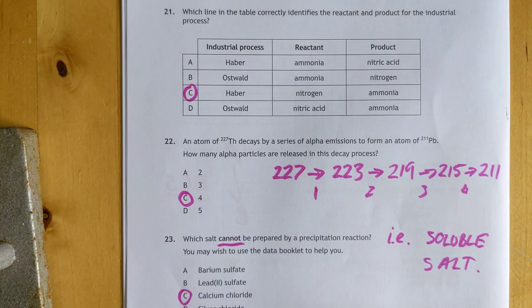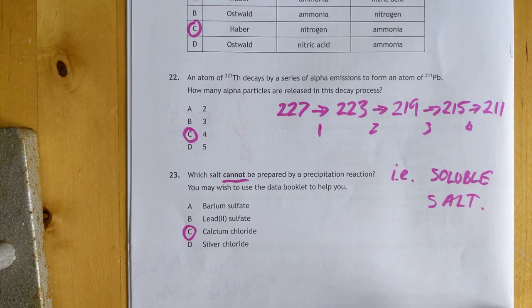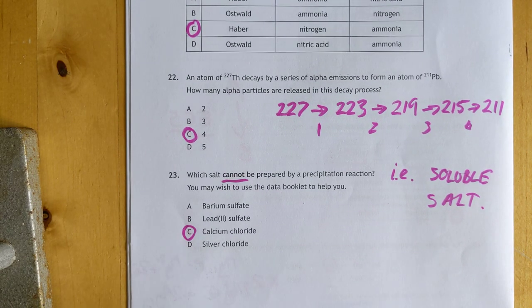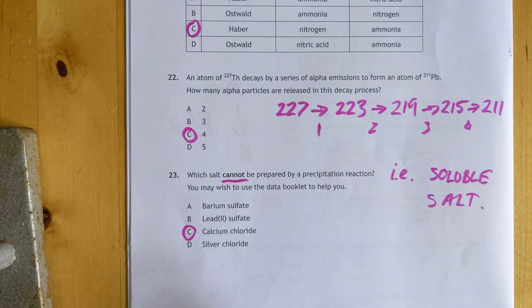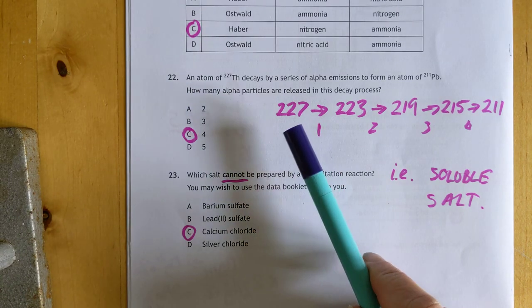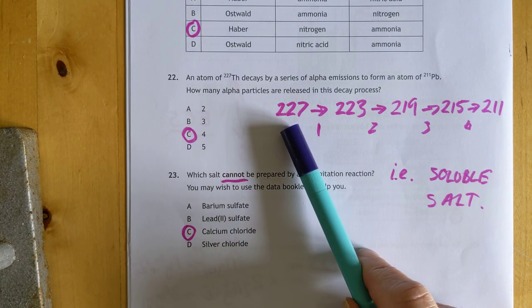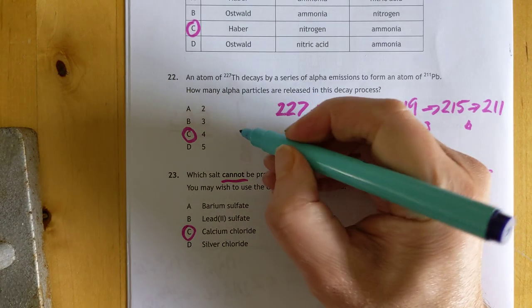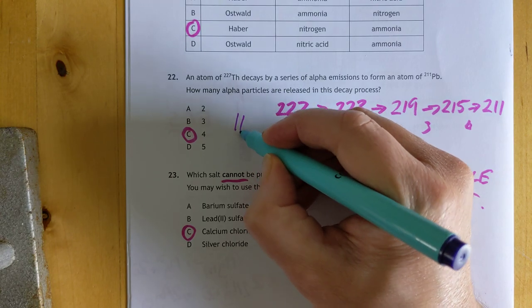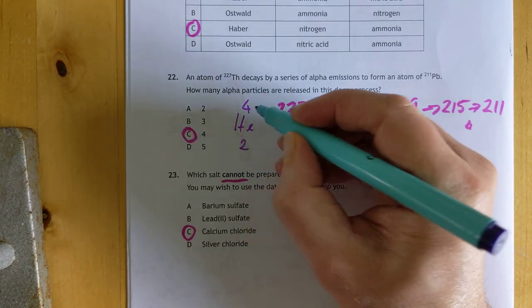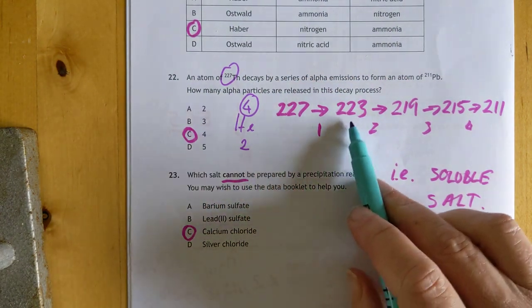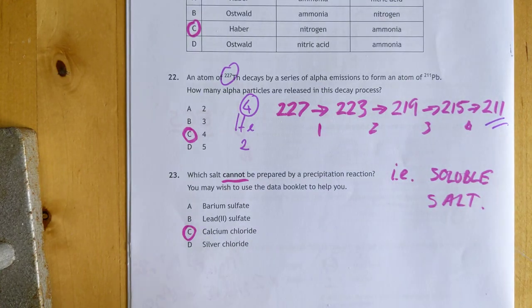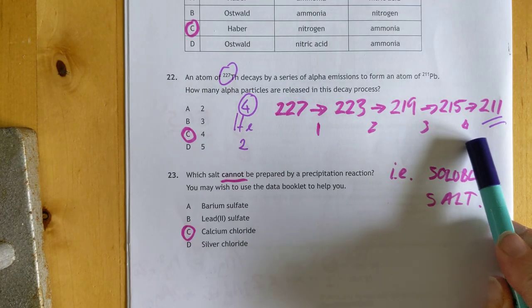An atom of thorium 227 decays by a series of alphas to form 211 lead. How many alpha particles? It's just donkey work time. We start at 227, and for every decay you kick off an alpha particle. An alpha particle is a helium nucleus effectively with a four and a two. That means the mass number is going to drop by four for each decay. I just dropped it continuously by four until I got to our target of 211, and the answer was four decays.